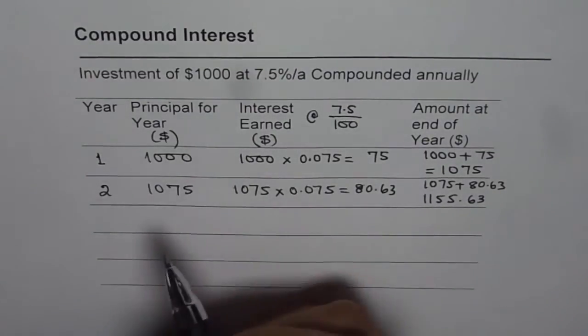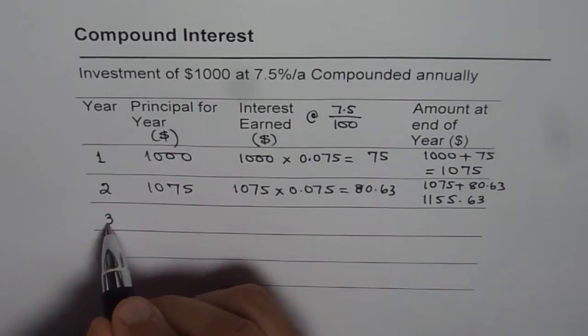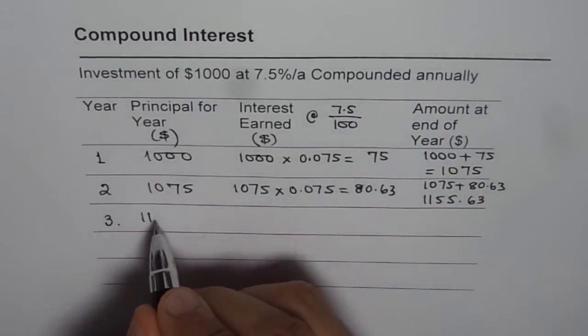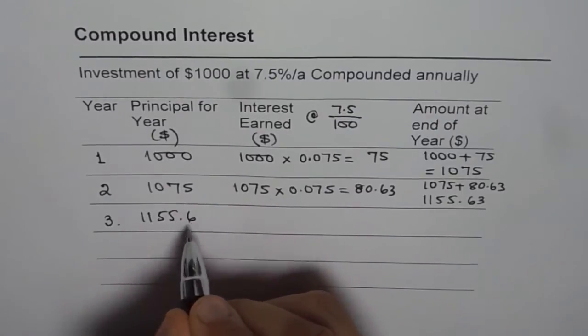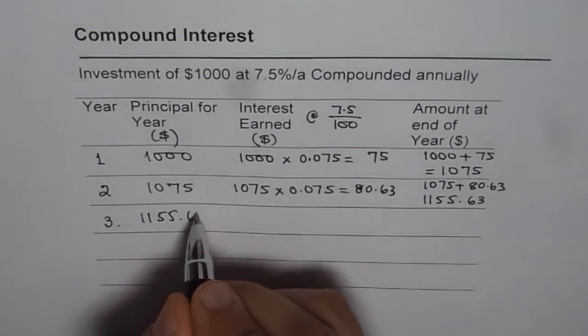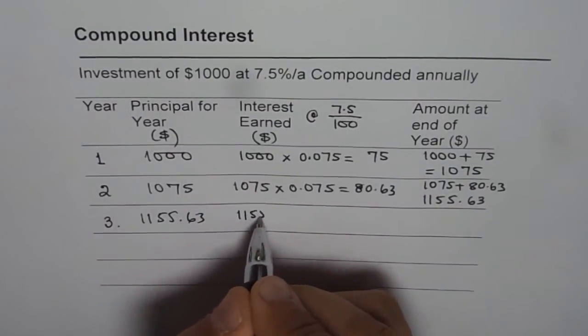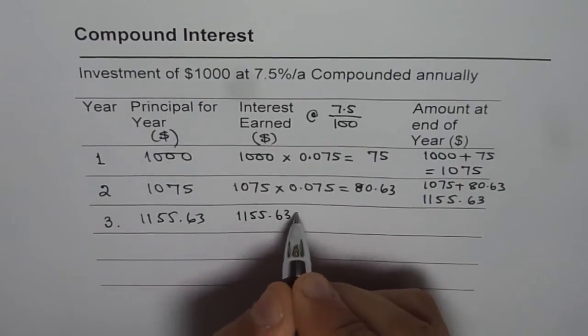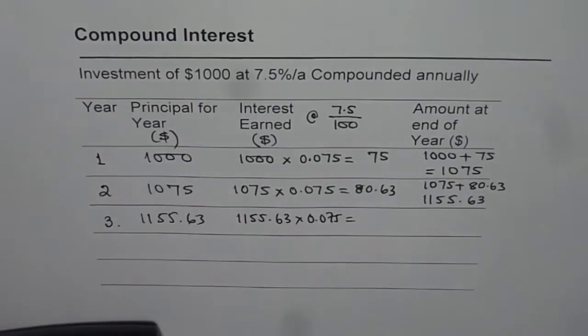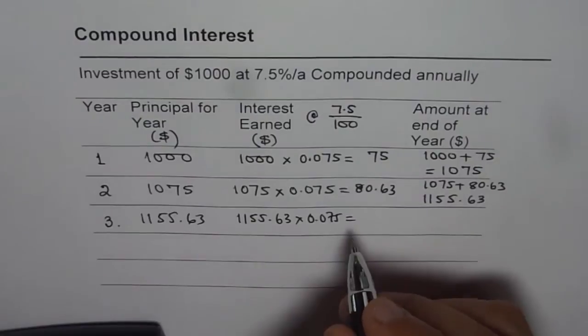In the beginning of the third year, since we are compounding, we will use 1,155.63 as the principal amount and the interest will now be earned on 1,155.63. It will be 1,155.63 times 0.075. Let us multiply and see what we get. 1,155.63 times 0.075 gives us 86.67.